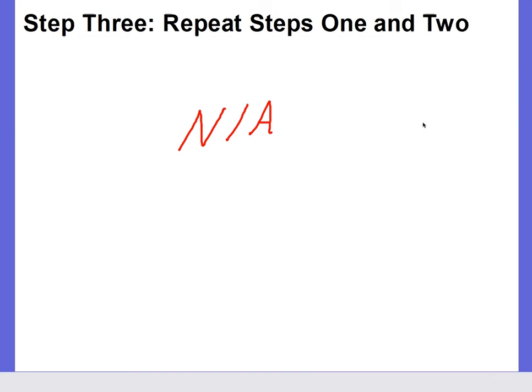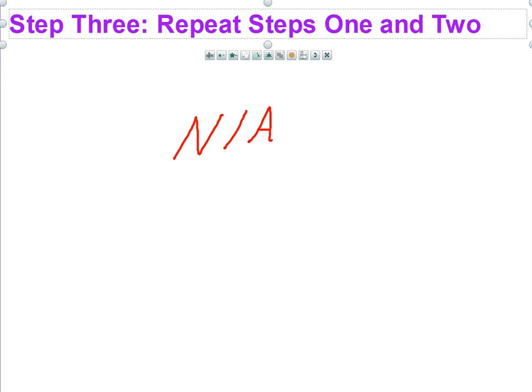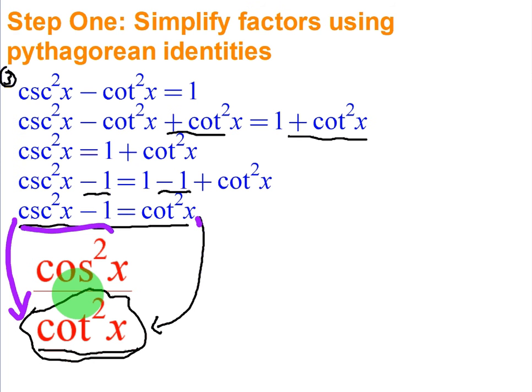Step three says to repeat steps one and two, which we did end up doing that in example one. However, if we try to repeat step one, there's really no Pythagorean identity we can use at this point. We've already narrowed it down to one on top and one on bottom, and again, we can't factor.